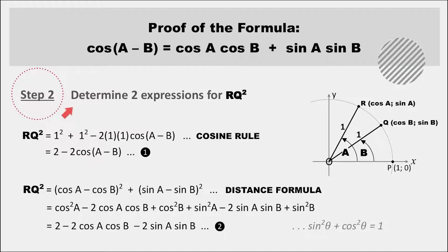Our next step is to determine two expressions for RQ squared. The first is using the cosine rule and the second is using the distance formula. Simplify each of these, remembering that sine squared plus cos squared is 1, hence the 2 here. You now have two different expressions for RQ squared.